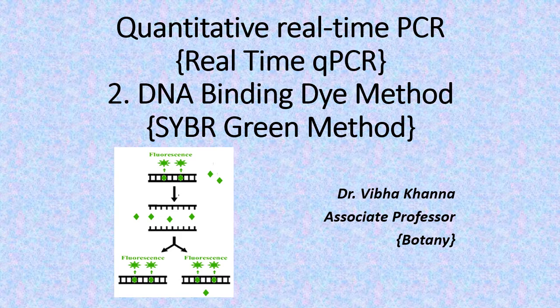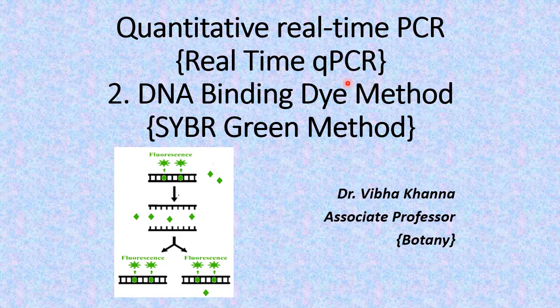Welcome once again. In a previous video on the real-time quantitative PCR, we had seen that while the PCR is running — that is while the polymerase chain reaction is taking place — we can quantify the amount of amplicons that are produced, and this is done by using some fluorescent molecule, by measuring the fluorescence. Now in this video and the upcoming videos, we will deal with the various methods of this real-time qPCR.